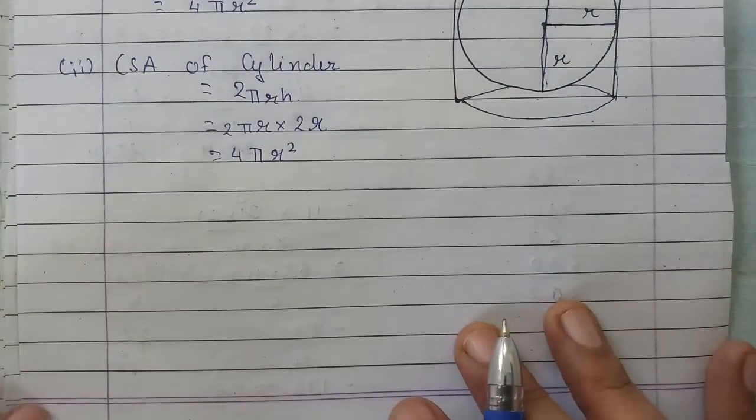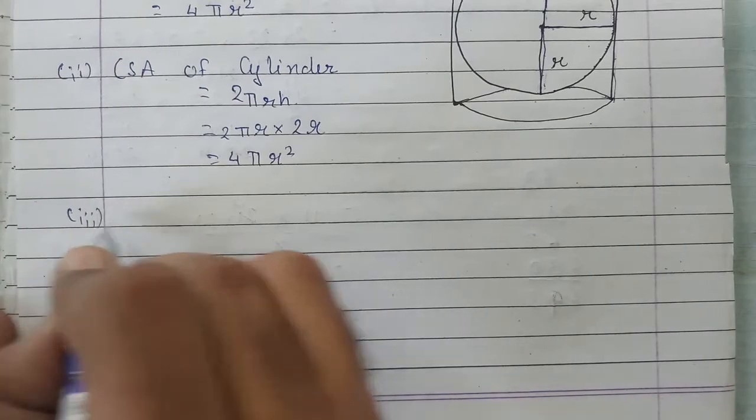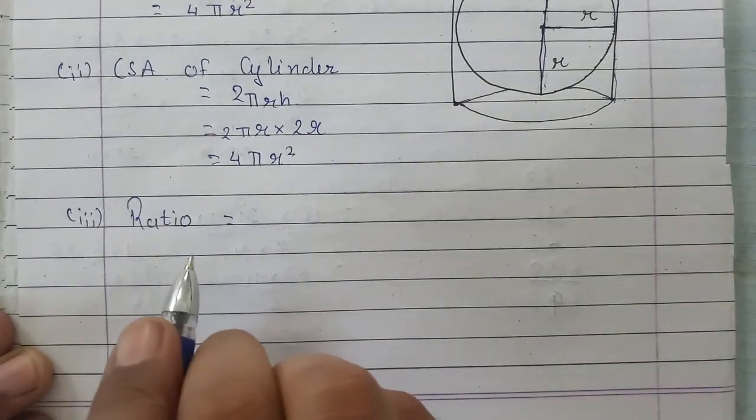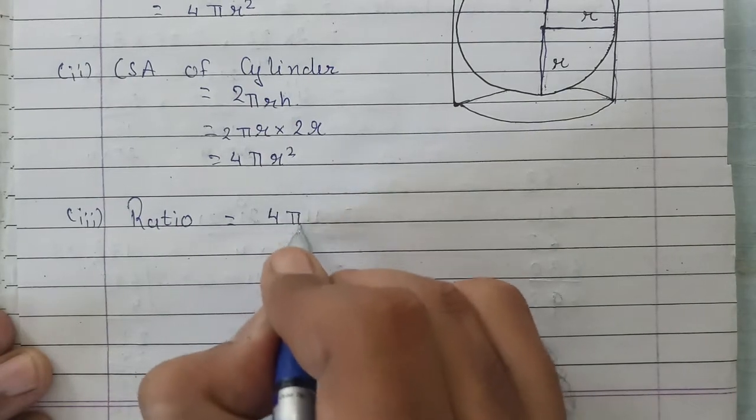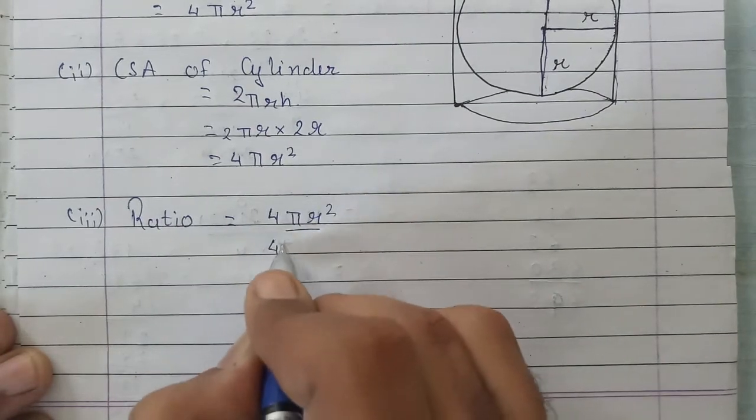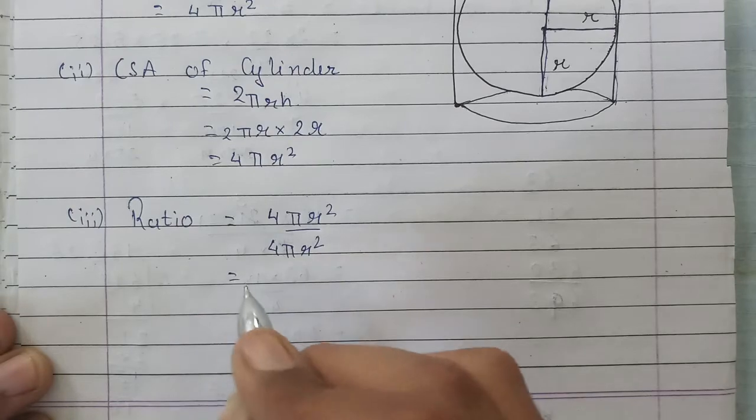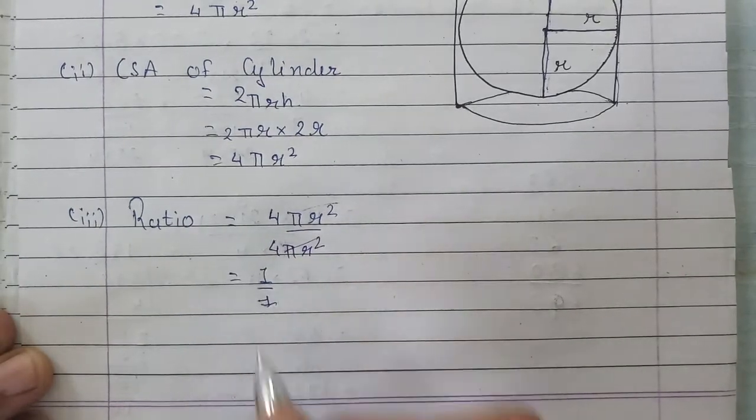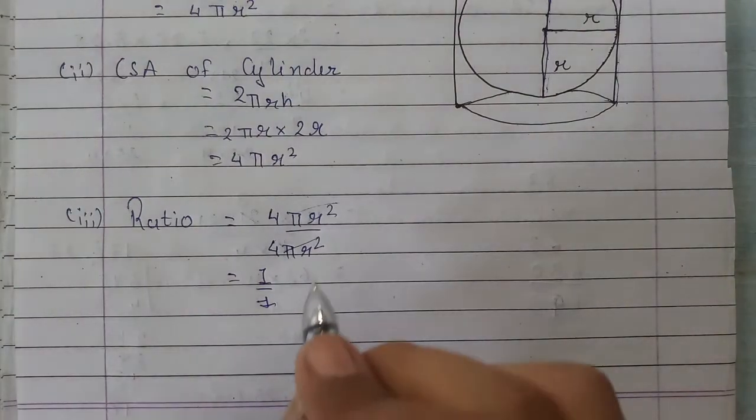In the third part, we need the ratio of both - what we found in first and second. So ratio will be 4 pi r square to 4 pi r square. Now both of them will get cancelled, and what we have is 1 upon 1. That means ratio will be: